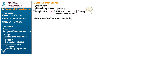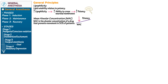Next, mean alveolar concentration, or MAC: the alveolar concentration of a drug that prevents movement in 50% of patients. MAC and potency are inversely proportional — potency equals 1 over MAC. As MAC decreases, the smaller the MAC, the greater the potency.